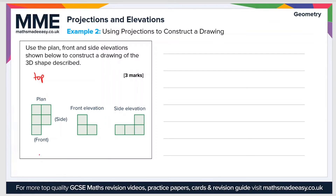To construct the drawing, let's find common features across the elevations. Looking at the front elevation, the shape is two blocks high on the left-hand side. Looking at the plan view from that perspective on the left, it confirms two blocks high on the left. The side elevation shows it's two blocks high on the furthest right of the three blocks. So that particular block is the one that's two blocks high.